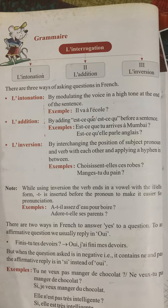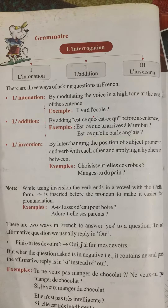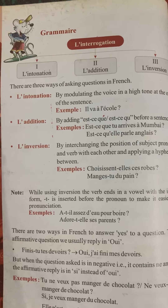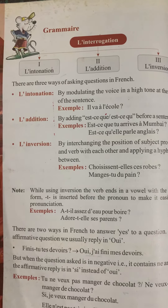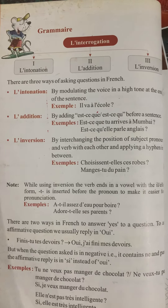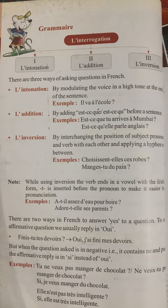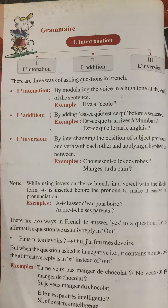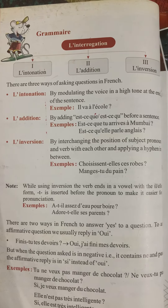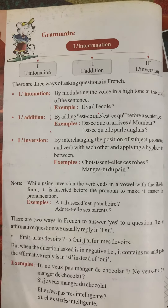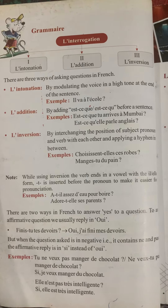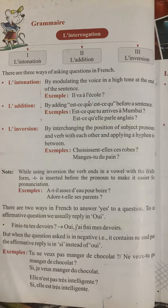There are three ways of asking questions in French. First, l'intonation — by modulating the voice in a high tone at the end of the sentence. Example: 'Il va à l'école' is a simple sentence. To make it in the interrogation form, we add a question mark at the end and modulate the voice to a high tone: 'Il va à l'école?' meaning 'Is he going to school?'